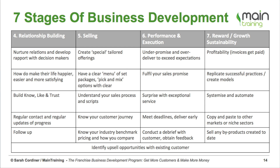Phase five is our selling stage. We've figured out who they are, we've built a relationship with them, and now we need to actually sell to them. We want to create special tailored offerings — we might do some bundling, create some packages. We need a very clear menu of packages, services, or a pick-and-mix of different types of services and products that we can offer our customers, so they actually know what they can buy from us. It's amazing — when you don't give somebody a menu, they don't know what they want for dinner.